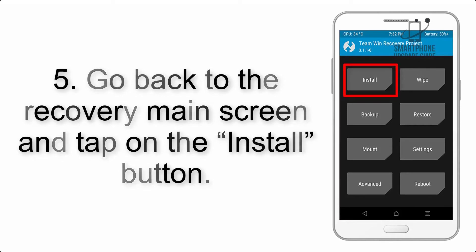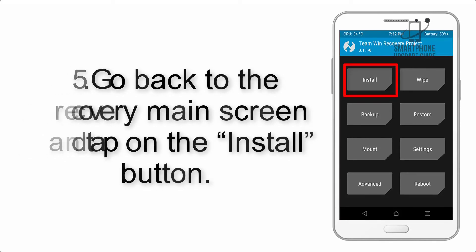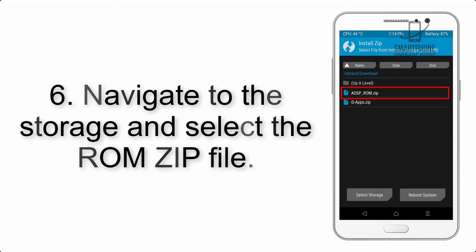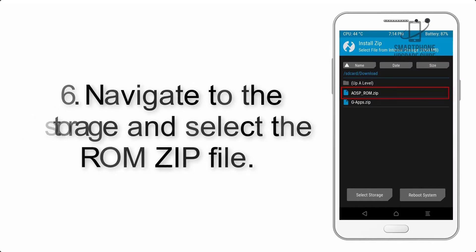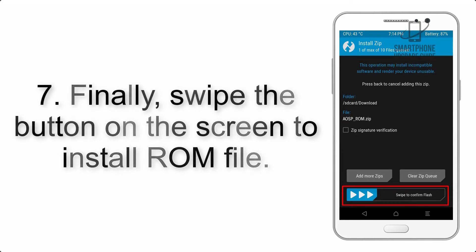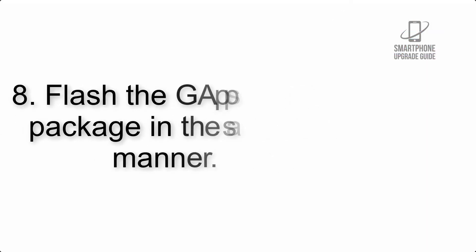Step 5: Go back to the recovery main screen and tap on the Install button. Step 6: Navigate to the storage and select the ROM zip file. Step 7: Finally, swipe the button on the screen to install the ROM file.